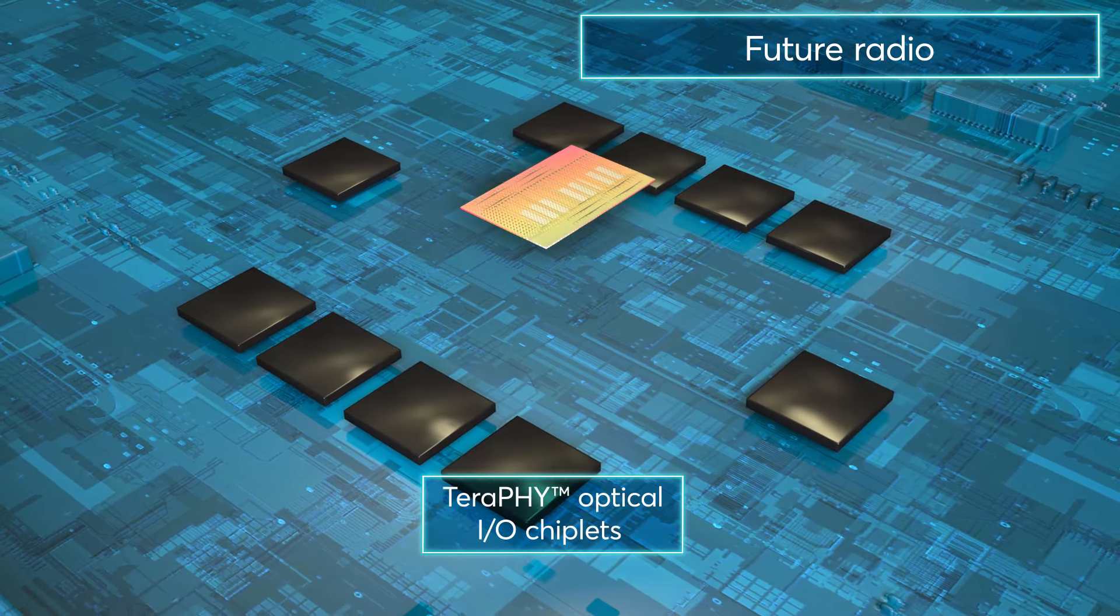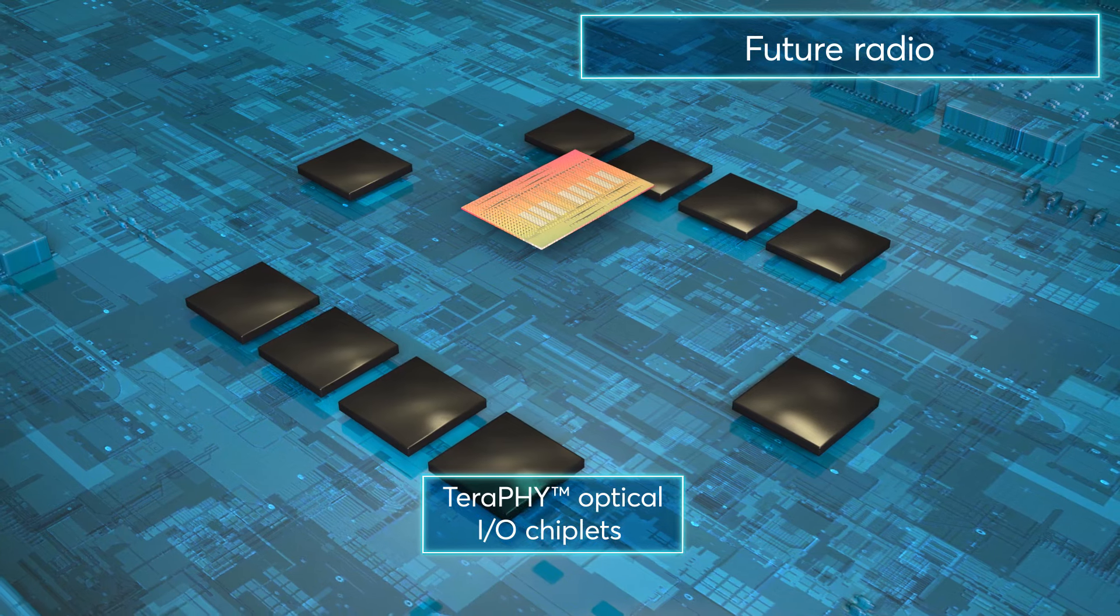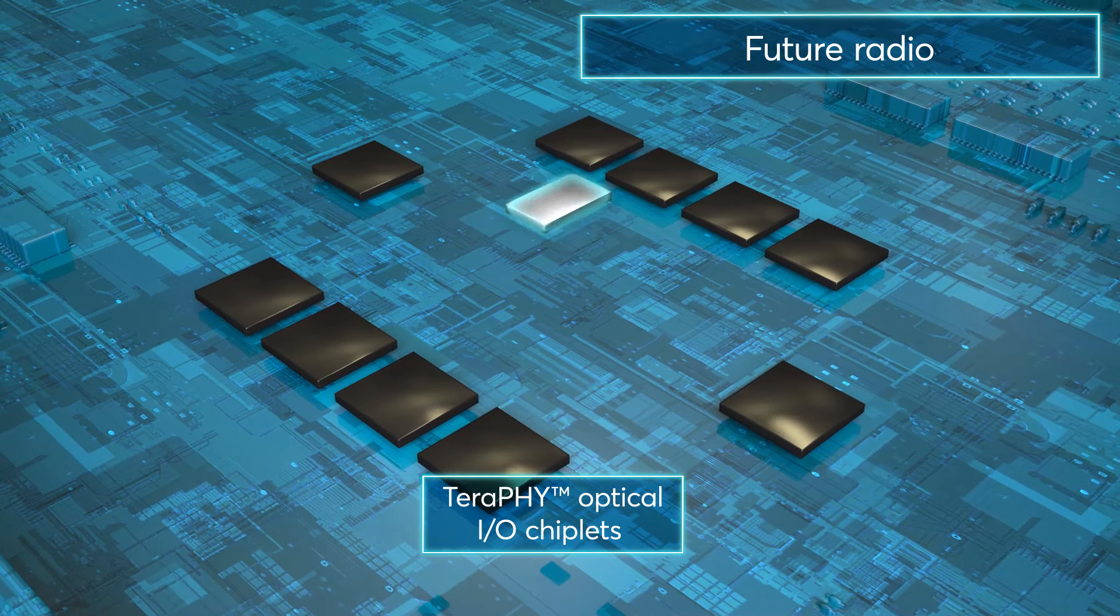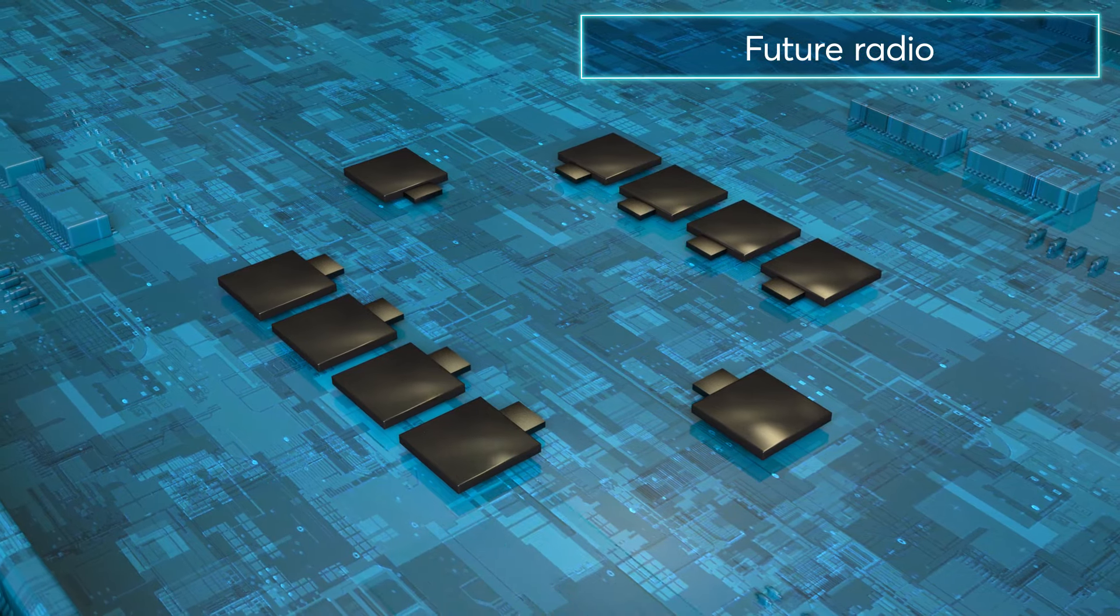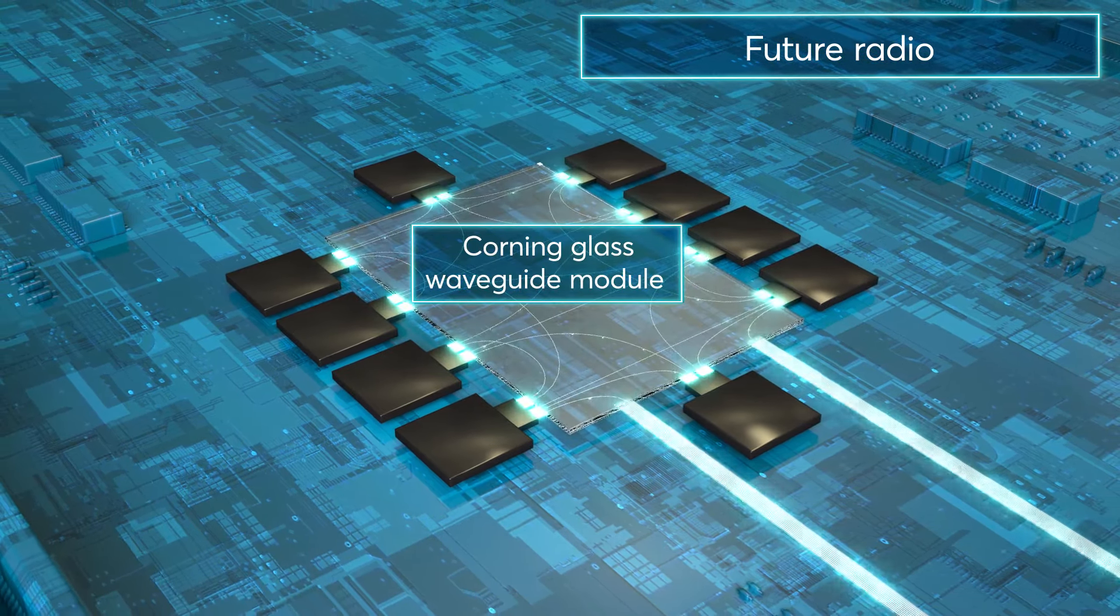Our joint concept integrates IR Labs' Terrify Optical I.O. chiplets to provide massive bandwidth density to each ASIC, which are interconnected through an innovative Corning Glass Waveguide module with built-in optical connections.